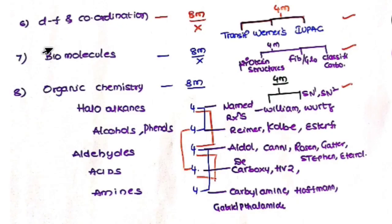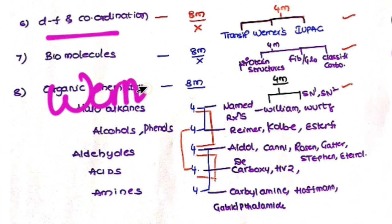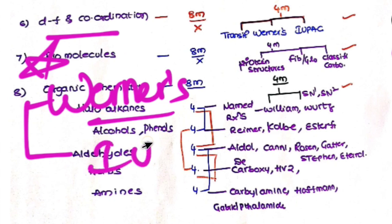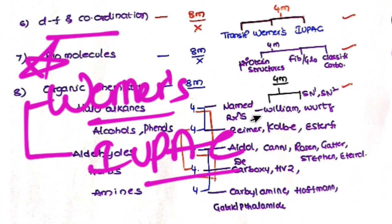Group 18 is very very important - if you study it compulsorily, you will get 4 marks. Next, for D-F Block: select this chapter compulsorily for 4 marks. Werner's theory is very very easy and a compulsory 4 marks question. Also watch the IUPAC nomenclature of coordination compounds video - that is also very easy.